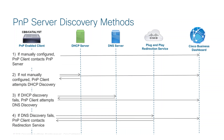If manual configuration is not used, the PNP client will first try to locate the PNP server using the DHCP Discovery method. To discover the server address using DHCP, the device will send a DHCP Discover message with option 60 that contains the string "Cisco PNP." The DHCP server must send a response containing the vendor-specific information option, option 43. The device extracts the PNP server address from this option and uses this address to contact the server.